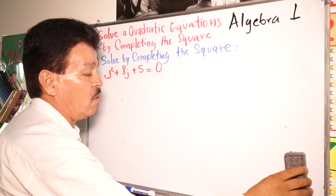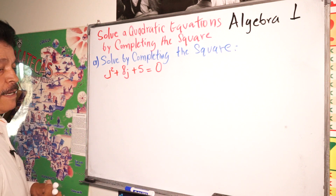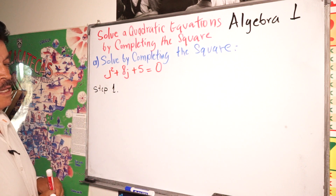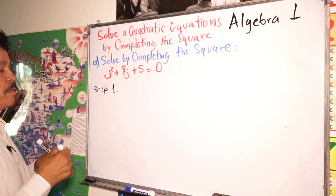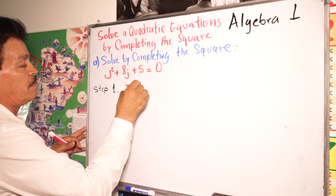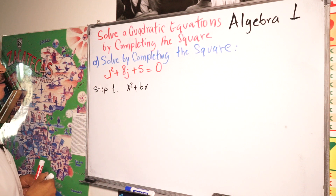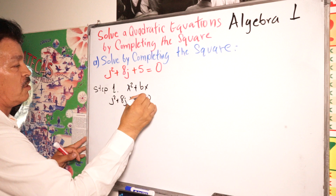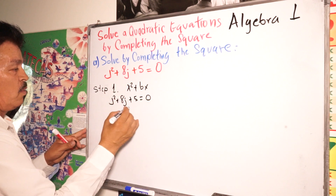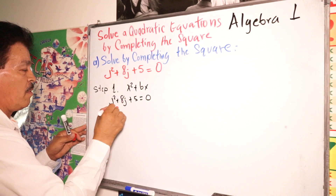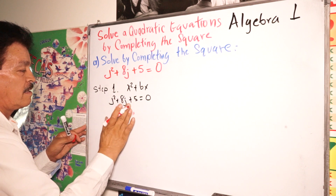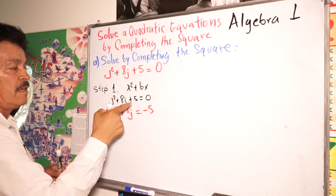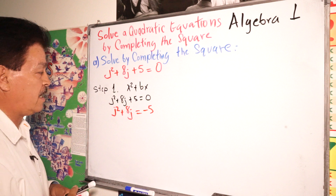Let me erase this and start the problem. Step one: our equation must look like x² + bx. So let's write our problem: j² + 8j + 5 = 0. Now move the 5 to the right side — j² + 8j = −5. Change the sign when you change sides.